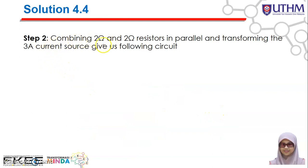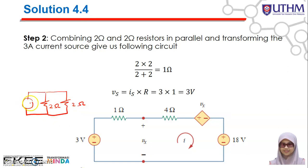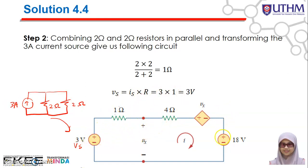Step 2: combine the 2-ohm and 2-ohm resistors in parallel and transform the 3-ampere current source back to a voltage source. The 2-ohm in parallel with 2-ohm gives 1 ohm. Then Vs = Is × R = 3 × 1 = 3 volts. So the final simplified circuit has a 3-volt voltage source in series with 1 ohm.